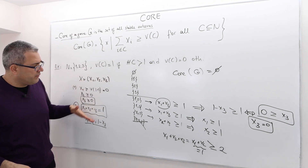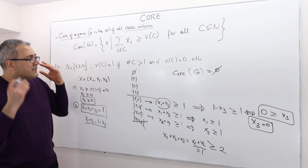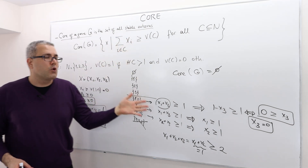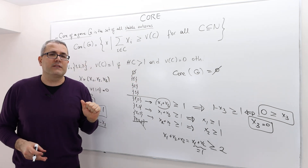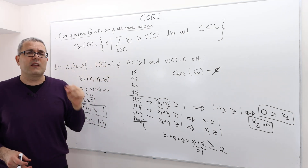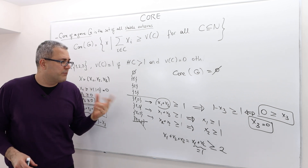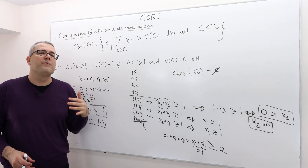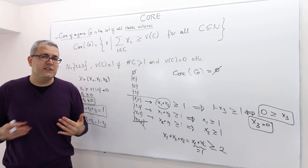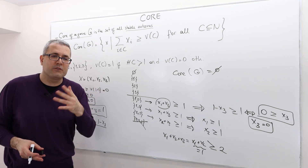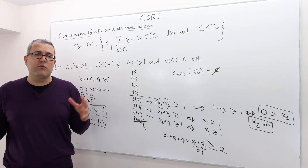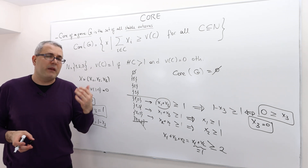This example illustrates the general approach: formally write down all the stability inequalities, then solve for x values — those solutions are the stable outcomes. When there are more than two or three players, this becomes a linear programming problem, and solving it by hand is not easy as the number of players increases. For simplicity, we'll work with examples where solving the inequalities is manageable.